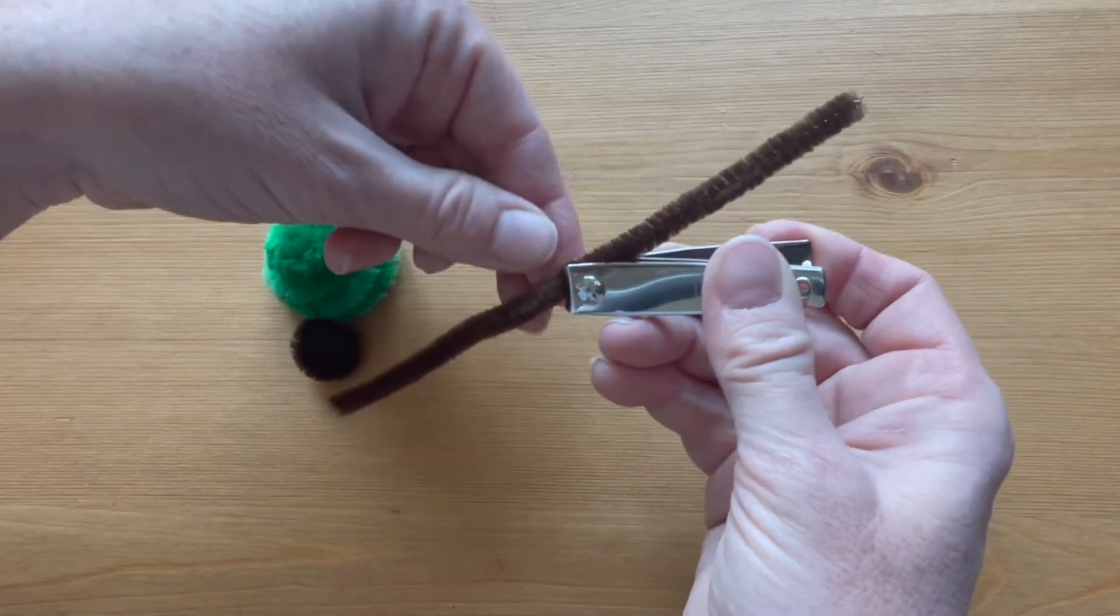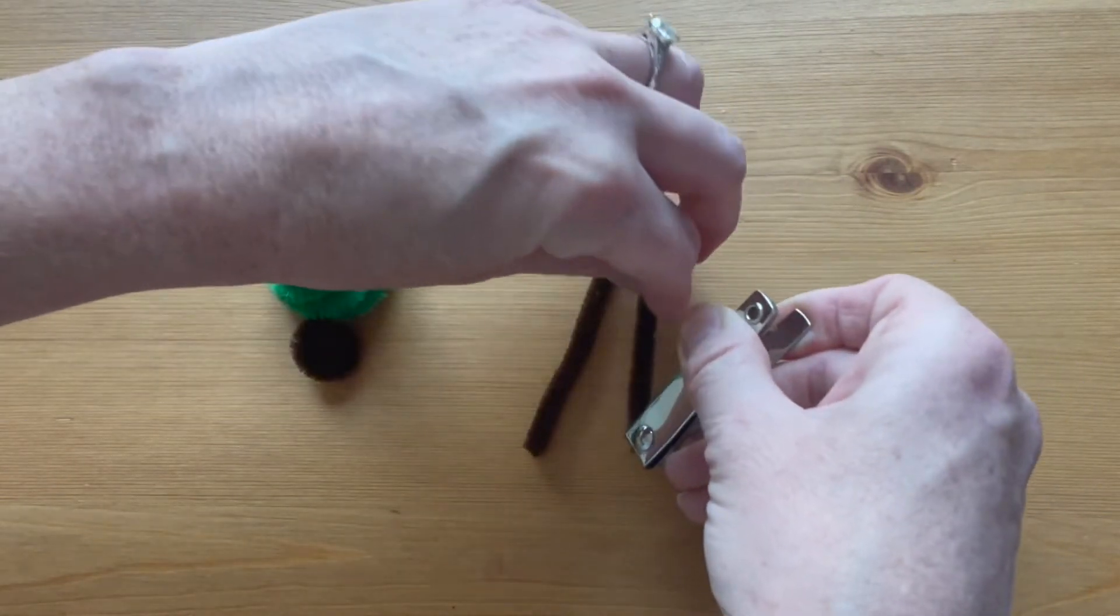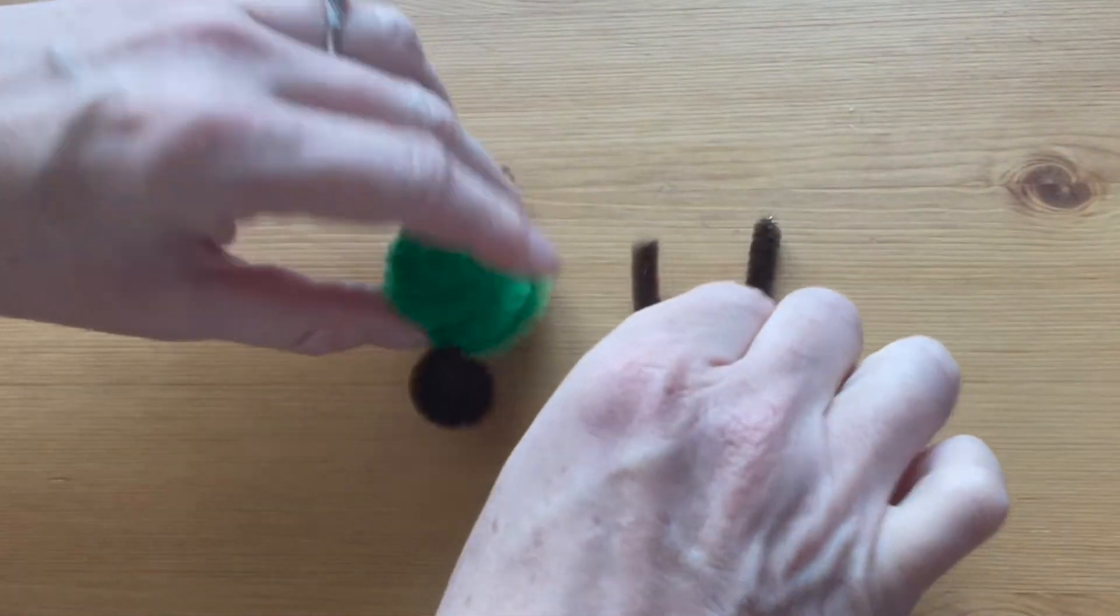Cut the other half of the brown pipe cleaner in half again and these are going to be the front and the back legs.